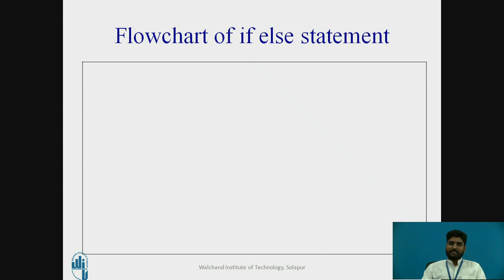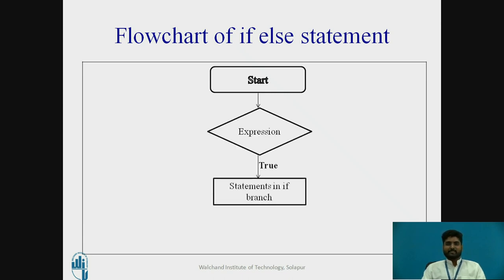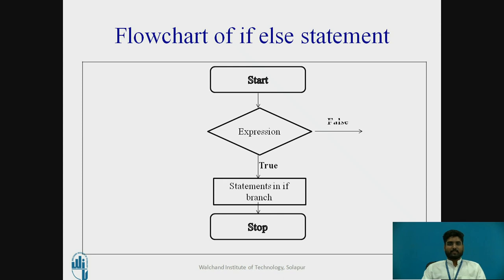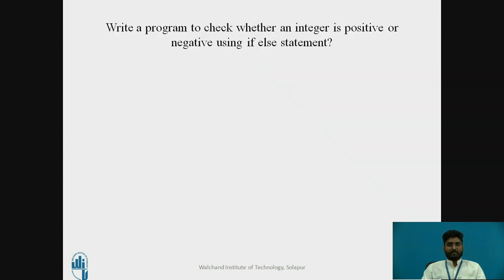We will see the flowchart of the if-else statement. There is a start, followed by the expression. If the statement is true, it enters the if branch and you get the output. If the expression is false, it skips the if branch, goes to the else branch, and then the program stops and you get the output.